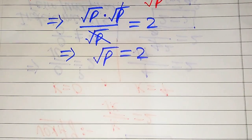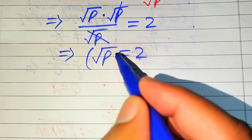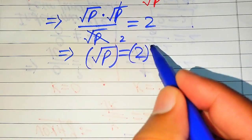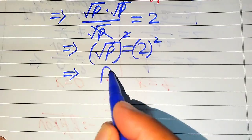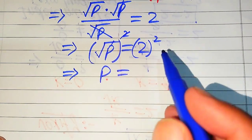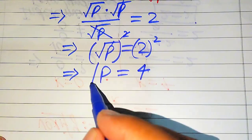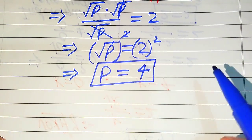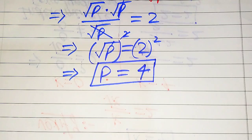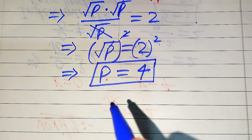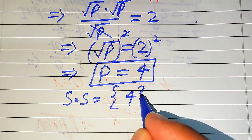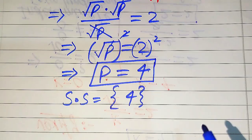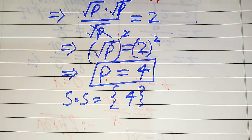To find p, we remove the square root sign by squaring both sides: the square root and the square cancel on the left, and we get p equals 2 squared, which is 4. This is the value of p from the second method, and we already verified this value satisfies the given equation. So we finally conclude that 4 is the solution set of the given equation. Thank you for watching — please subscribe for more videos.